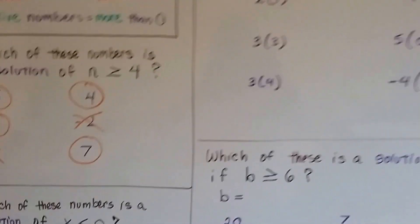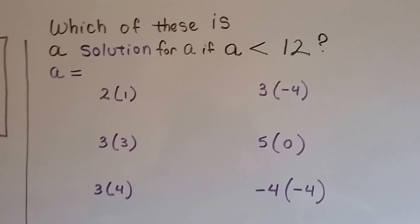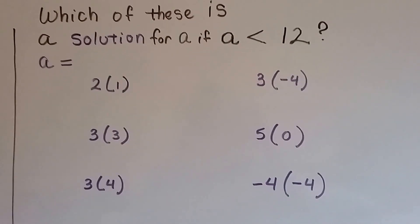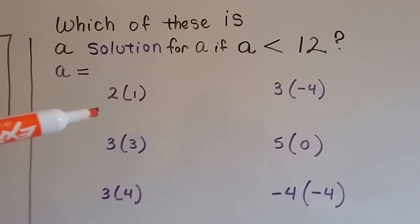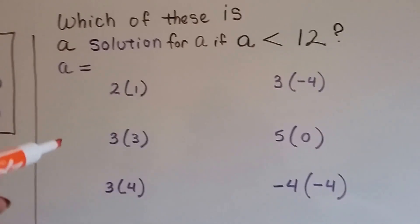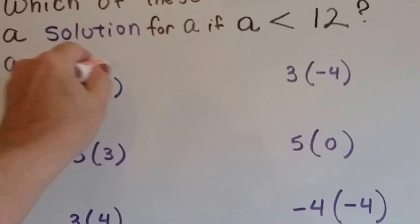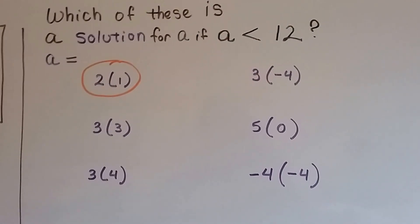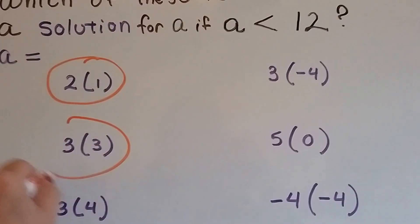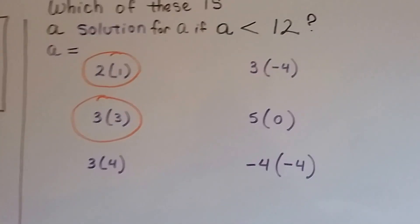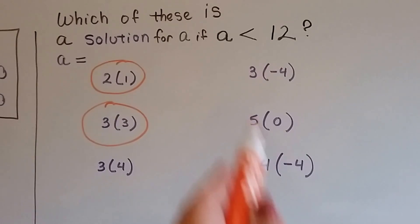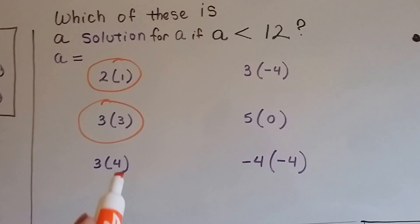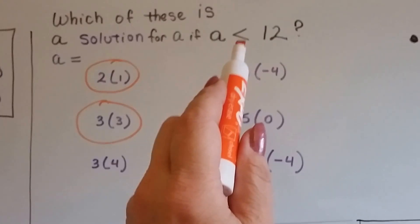Which of these is a solution for A if A is less than 12? Here we have multiplication, so we have to multiply these together to find out if they're less than 12. Is 2 times 1 less than 12? Yes, so 2 times 1 would be a solution. How about 3 times 3? That's 9, and 9 is less than 12. How about 3 times 4? 3 times 4 equals 12. There's no bar underneath the inequality sign, so that's not a solution — it's not less than 12, it's equal to it. The sign only says less than.